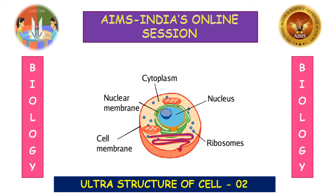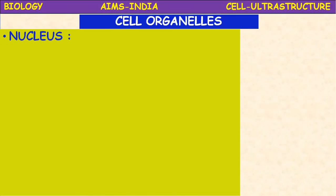We studied about the size, shape, and structure of the cell. We discussed about the plasma membrane and cytoplasm and discussed the nucleus to some extent. Let us proceed further about the structure of nucleus. Cell organelles are the small structures present in the cytoplasm of the cell which perform different functions.